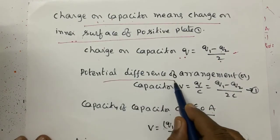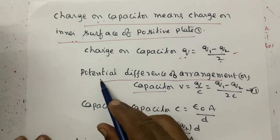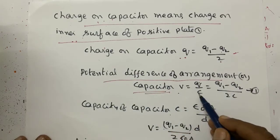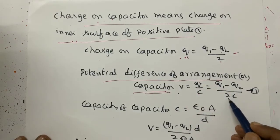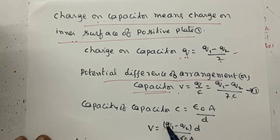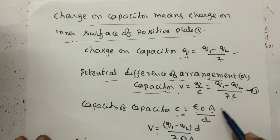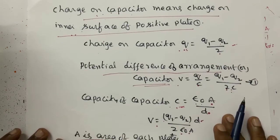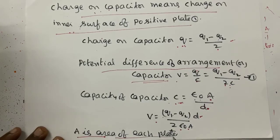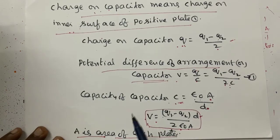The potential difference of the arrangement or capacitor is V = Q/C, where Q is the charge on the capacitor, equal to (Q1 minus Q2)/2, and C is the capacitance. The capacitance C equals epsilon-naught times A divided by d. Substituting, V equals (Q1 minus Q2) divided by 2, multiplied by d over epsilon-naught A, where A is the area of each plate.